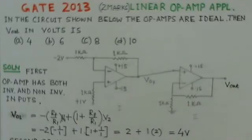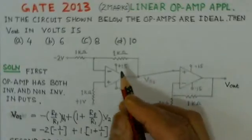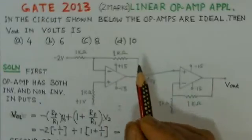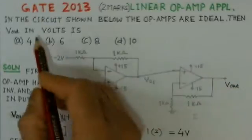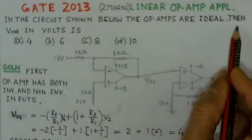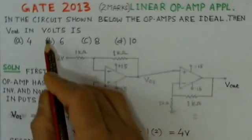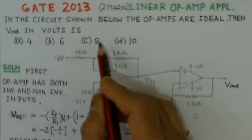First, we will read out this problem and then give the solution. In the circuit shown below, the op-amps are ideal. Then the Vout in volts is,